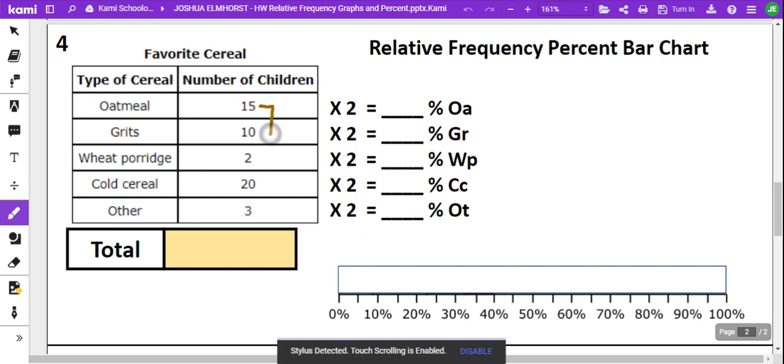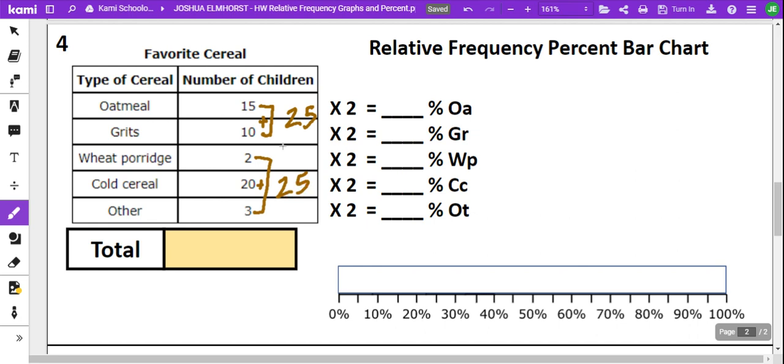We're going to add these all up. So we have 25 here, 15 and 10, and then 2, 3, 4, 5, and 20 is going to give us 25. 25 and 25 will give us 50. So that works out nicely with percents.